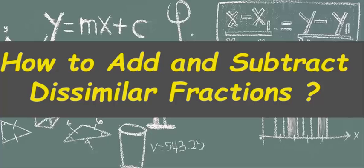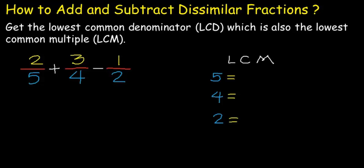How to add and subtract dissimilar fractions? To add or subtract dissimilar fractions, our first step is to find the lowest common denominator of all the denominators, which is also the lowest common multiple or LCM. We are going to find the lowest common multiple of 5, 4, and 2.